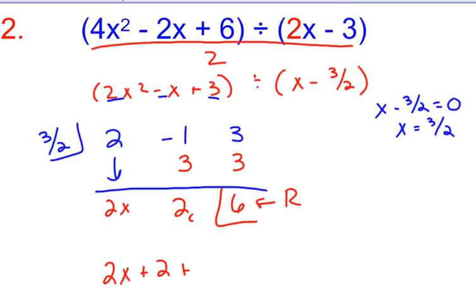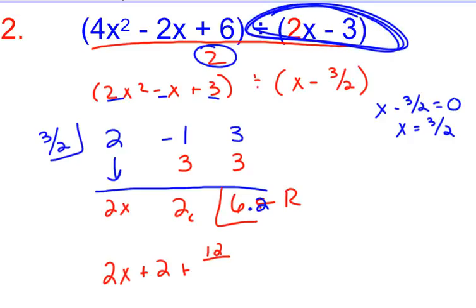And then with my remainder always, since I divided by 2 in the beginning, I need to now times my remainder by 2. So, and the reason it's plus instead of minus is because it's a positive remainder. Last one we did was negative. So plus 12 over the original divisor. So right here, that's always what it's going to be over. So over 2x - 3.